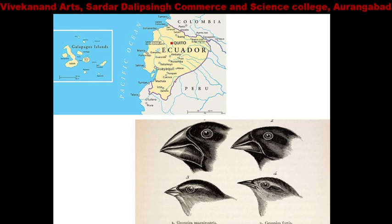Darwin's finches show divergent evolution, also called adaptive radiation. Darwin's finches is the well-studied example of adaptive radiation. Adaptive radiation can also be seen in penguins and reptiles. Thank you very much.